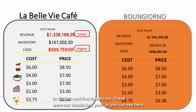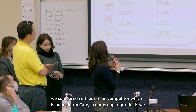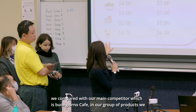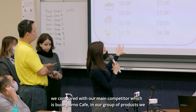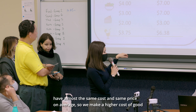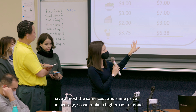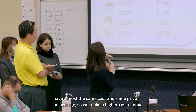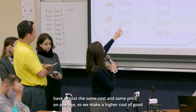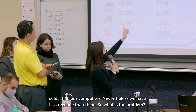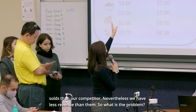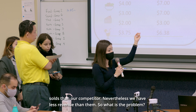These were our results last year. As you can see here, we compared with our main competitor, which is Bongiorno Café. In our group of products, we have almost the same cost and same price on average, so we make a higher cost of goods sold than our competitor. Nevertheless, we have less revenue than them.